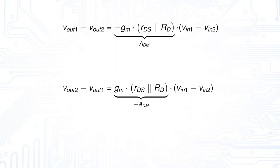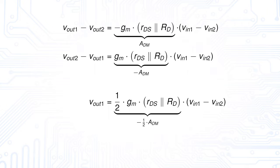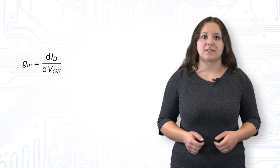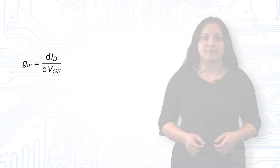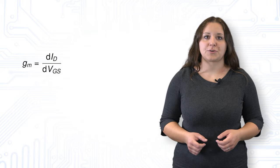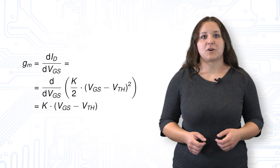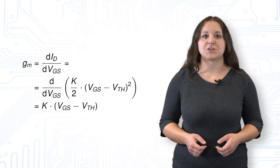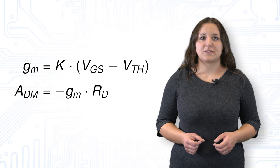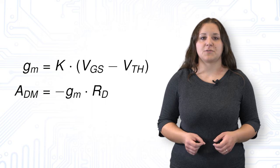When we change the order of the output voltage, we get the same equation for our differential mode gain but with a different sign. Considering only one output and both input voltages results in a factor of 0.5 in our equation. Regardless of which inputs and outputs we consider, we still need to find an expression for Gm. Gm is defined as the derivative of Id with respect to Vgs. We must be careful to use the correct equation for Id here, since our MOSFETs are operated in the saturation region. Now we have all the necessary equations to calculate the differential mode gain of our differential amplifier.